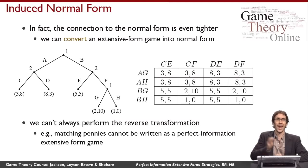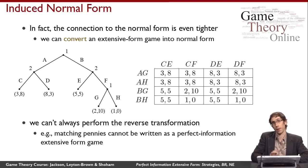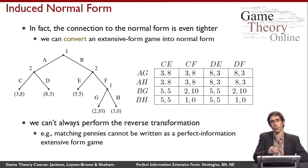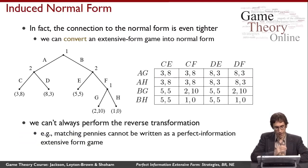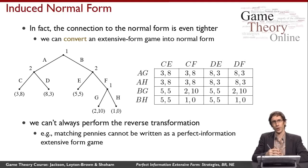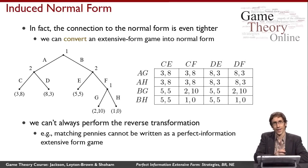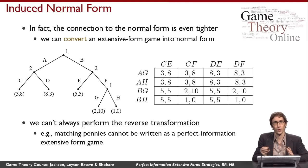We can't always do the transformation in reverse. If you give me a normal form game, I can't in general make a perfect information extensive form game out of it. The special repeated structure in the induced normal form is important, and general normal form games lack it. An example is matching pennies — it's essential that the two players play simultaneously, and in a perfect information game one player would have to move first and the second player would see that move.